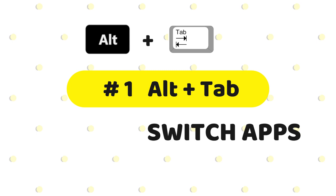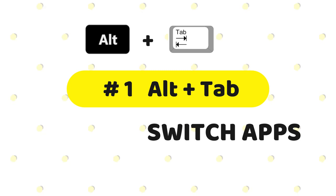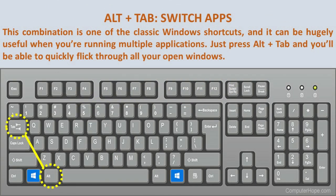Alt plus Tab — switch apps. This combination is one of the classic Windows shortcuts, and it can be hugely useful when you're running multiple applications. Just press Alt plus Tab and you'll be able to quickly flick through all your open windows.